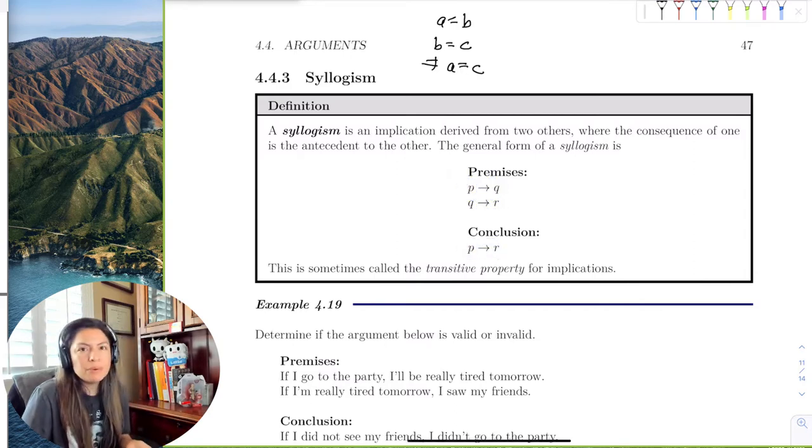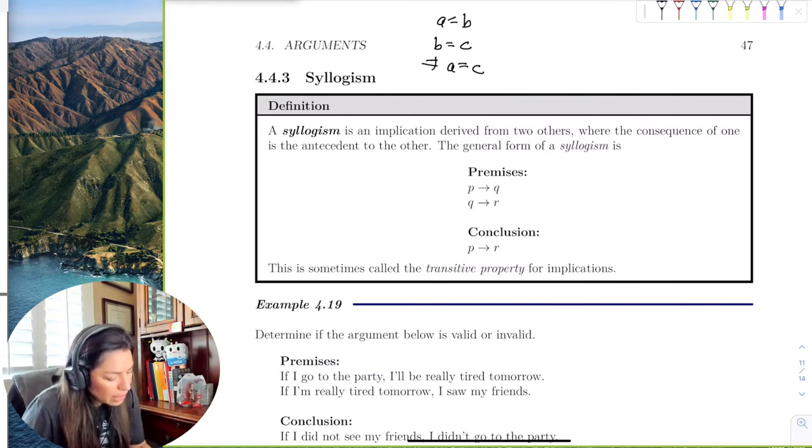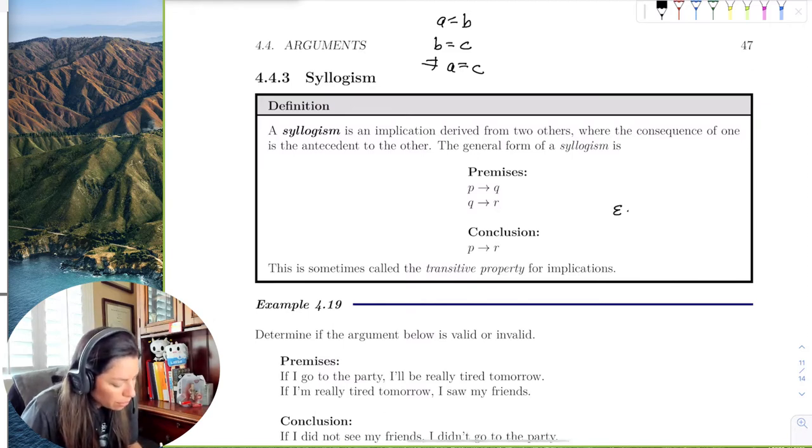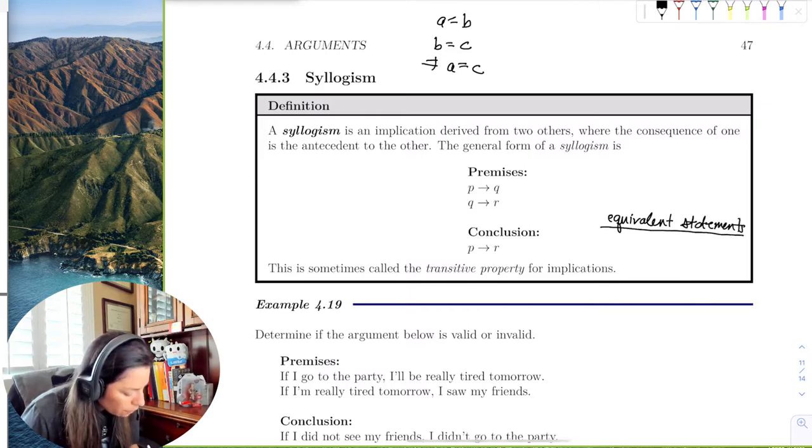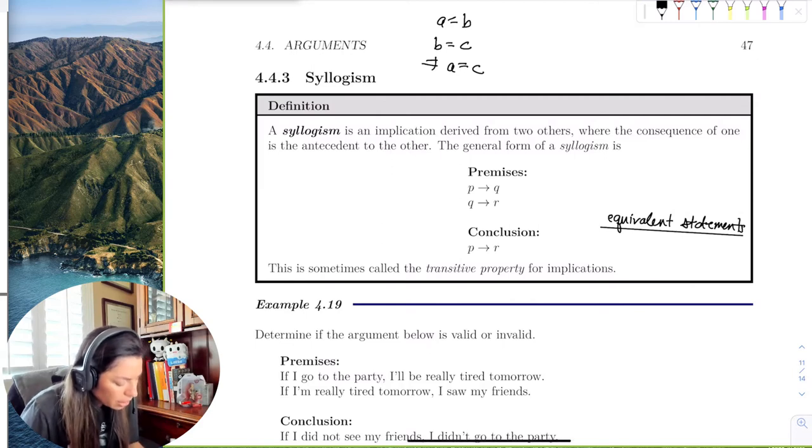But we have to remember the equivalent statements of an implication. So let's say that if we have a conclusion that says if P, then R, then we have to remember back when we discussed equivalent statements. We have to go back and remember, well, what was the equivalent statement to the implication?